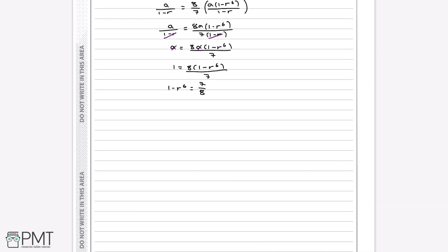Now if we go further to solve this and add r^6 to both sides, then take away 7/8 from both sides, we're left with r^6 = 1/8. This gets us our next two marks. Getting the formula just in terms of r is our second method mark, and then our third method mark comes from getting that r^6 = 1/8.